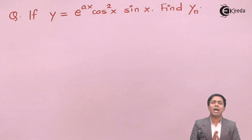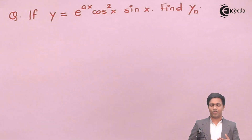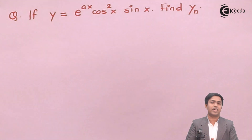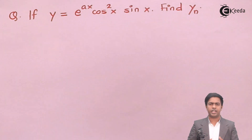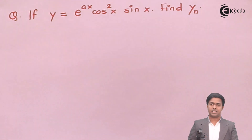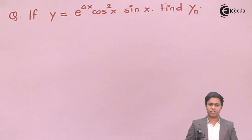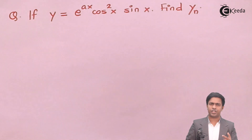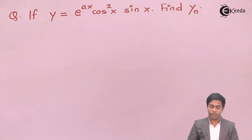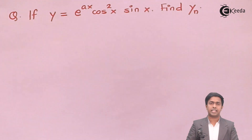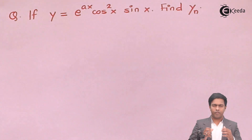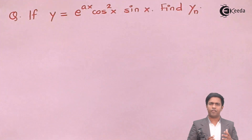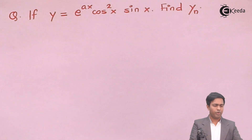The question is how to find the nth derivative of this transcendental function. Before proceeding, let me show you the formula that matches this given function. In this function we have an exponential term e^(ax) and trigonometric terms cos²x and sin x, and we have a formula that exactly matches this form.